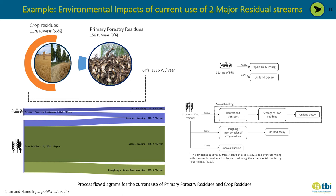The figures on the right show the process flow diagrams for the current use of these streams. Out of one ton of primary forestry residue, 560 kilograms is burnt and 430 kilograms is left to decay on land. For one ton of crop residues, 680 kilograms is used as animal bedding, 200 kilograms is ploughed and incorporated back into the soil, and the remaining is burnt.